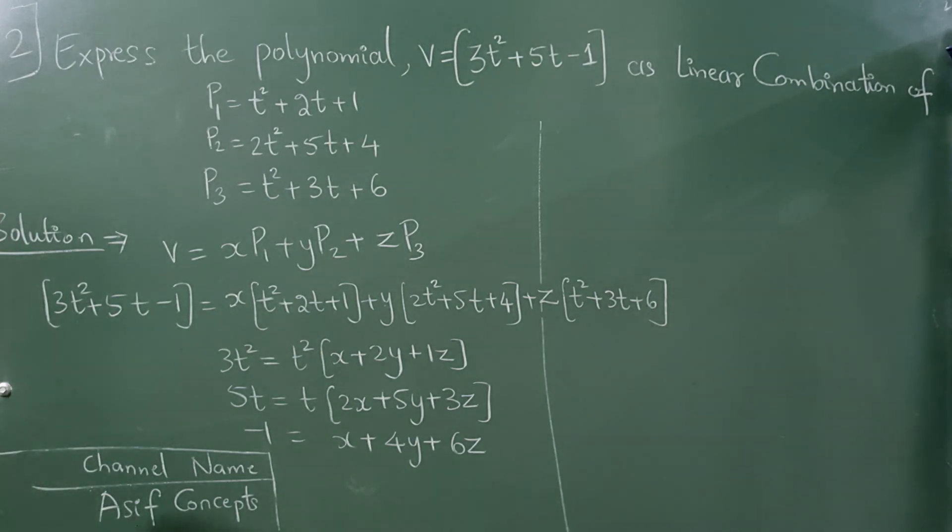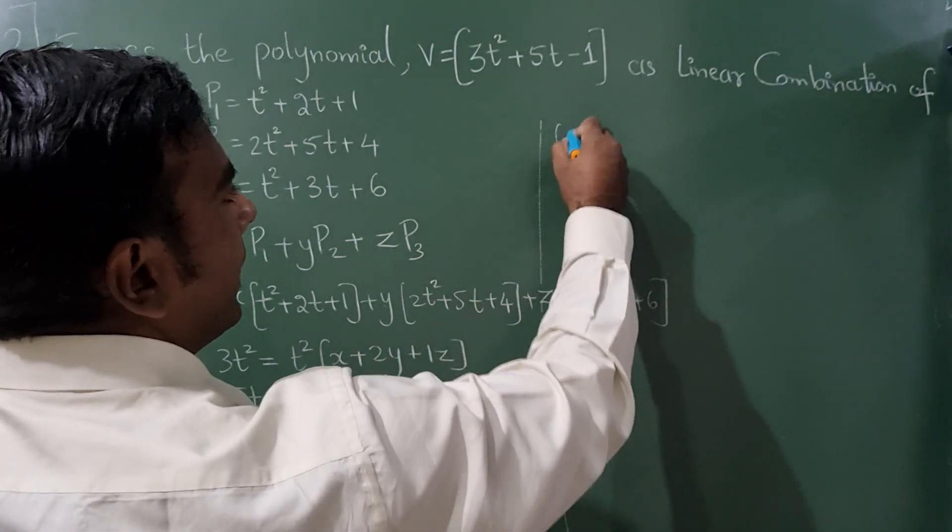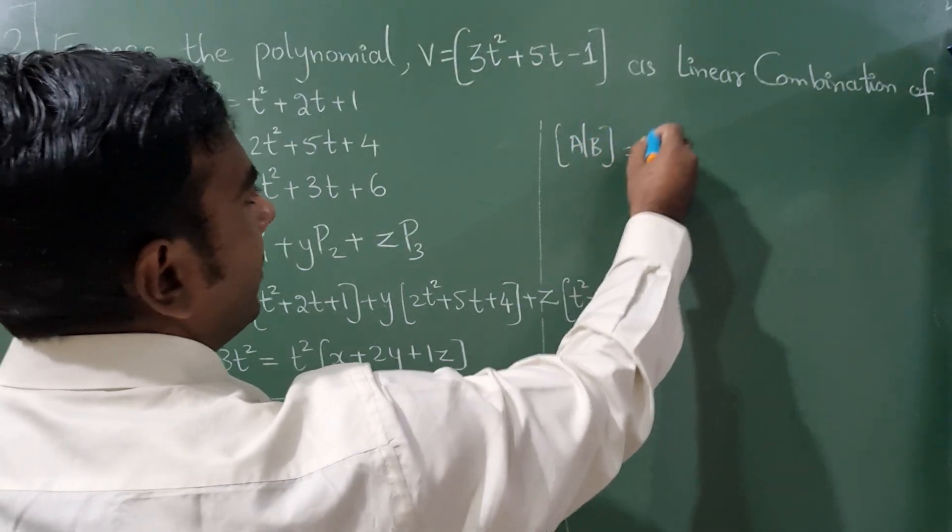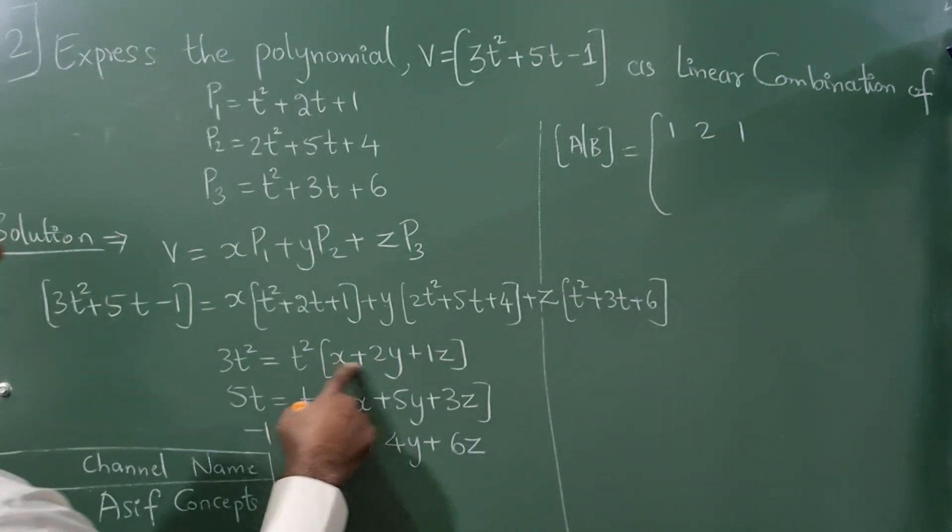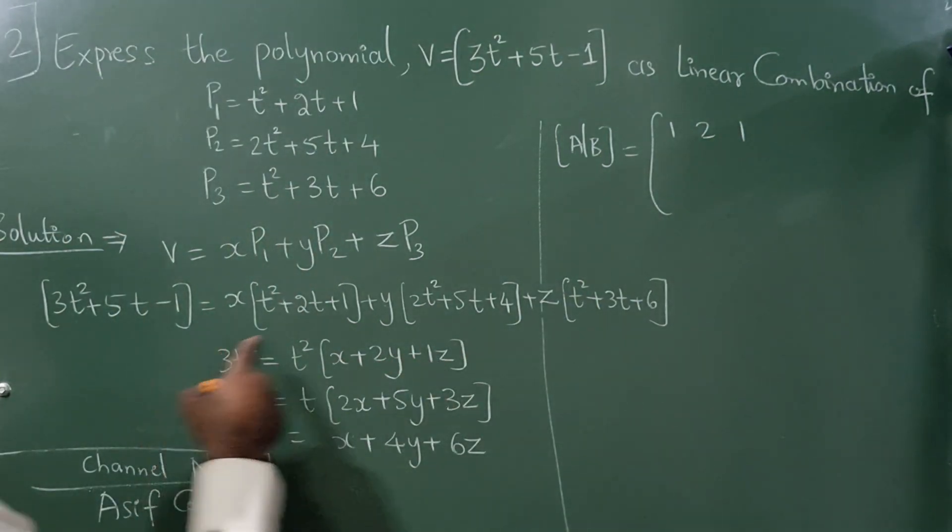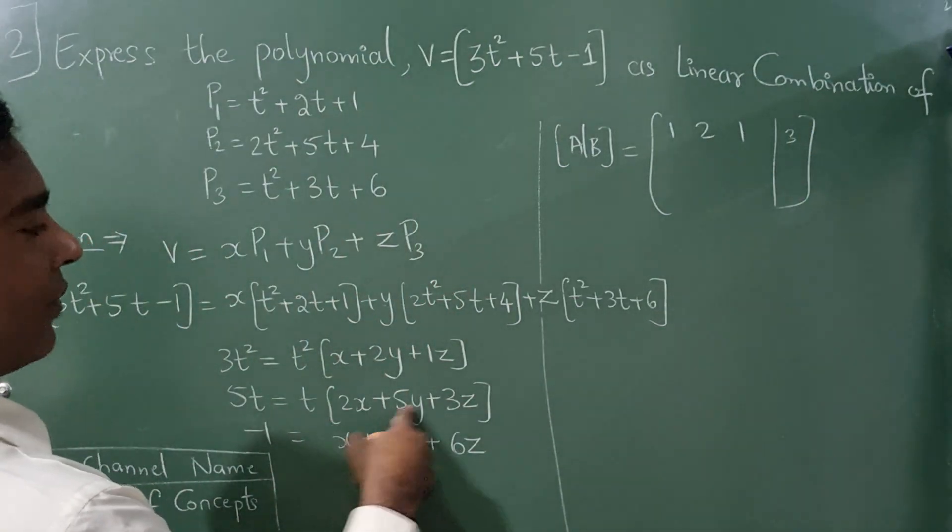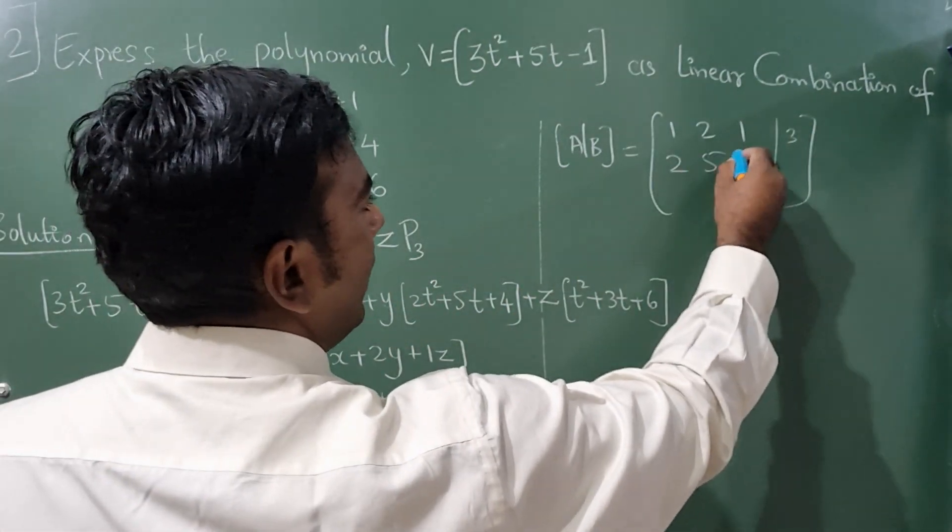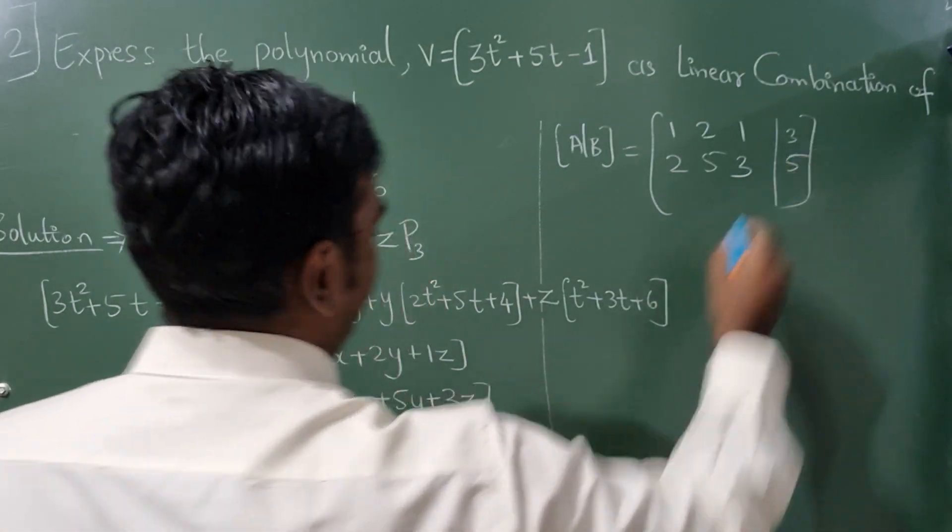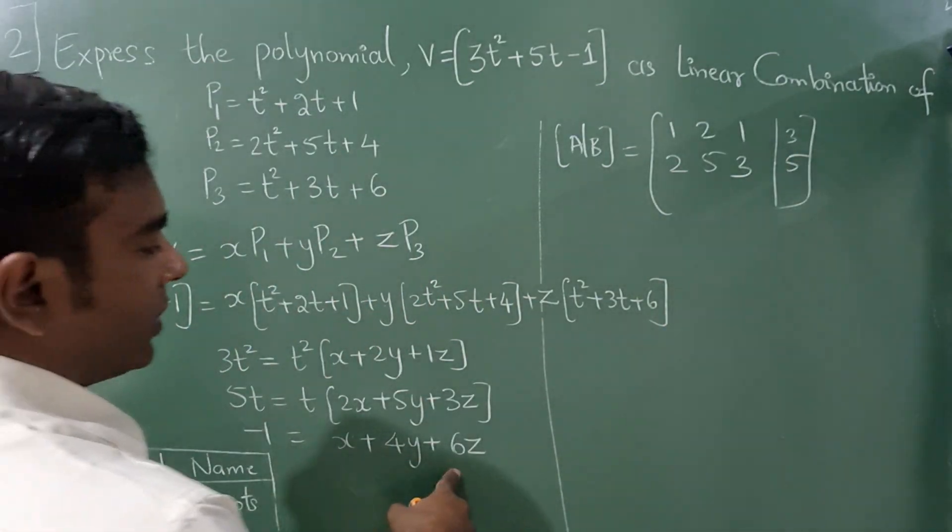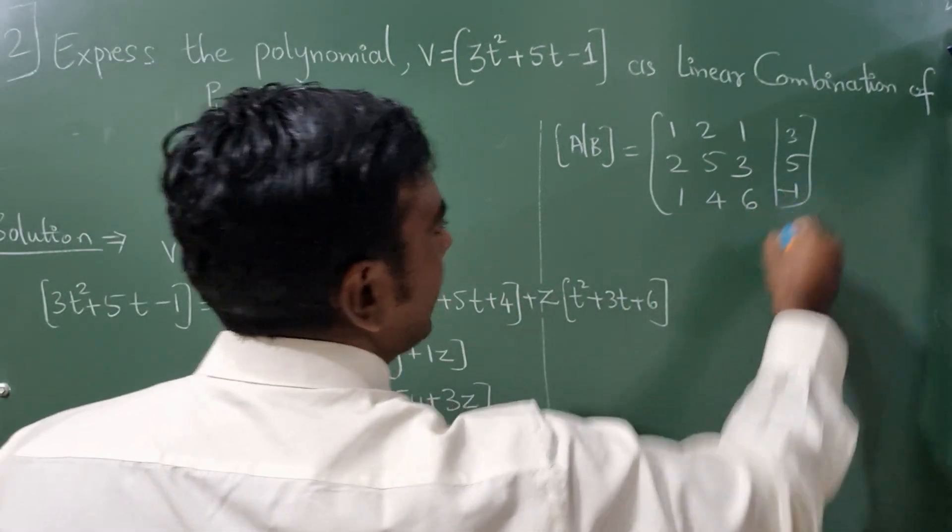Now this can be written in matrix form. So coefficient is 1, 2, 1 and write this 3 right here. 2, 5, 3 and write this 5 here. Now 1, 4, 6 and write this minus 1 at the last.